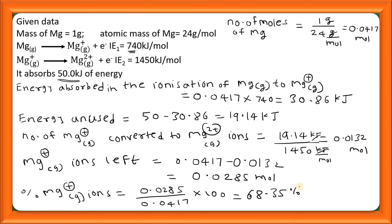And obviously the percentage of Mg²⁺ will be 100 minus 68.35, that is 31.65 percent. That is why option number C is the correct answer.